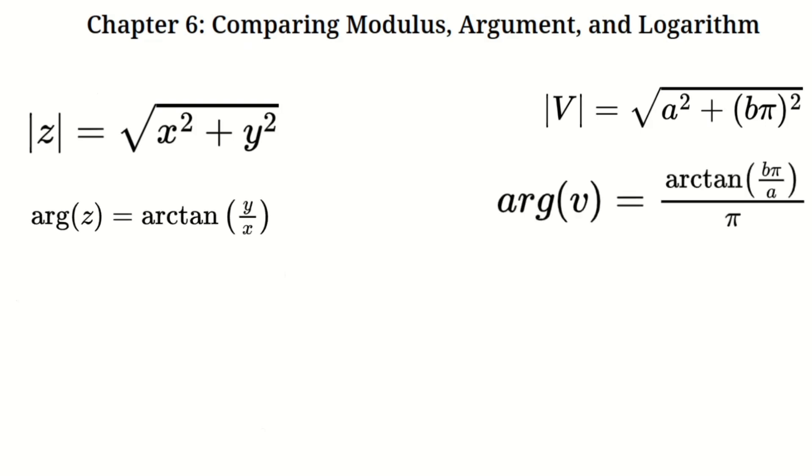Chapter six, comparing modulus, argument, and logarithm. Now let's compare the two systems. Take the modulus, for example. In the complex system, the modulus of z equals the square root of x squared plus y squared. In the virtual system, the modulus of v equals the square root of a squared plus b times pi squared. Notice the logarithmic scaling introduced by j.